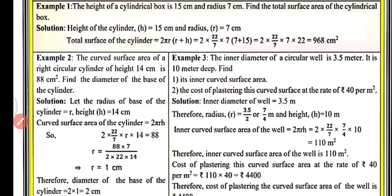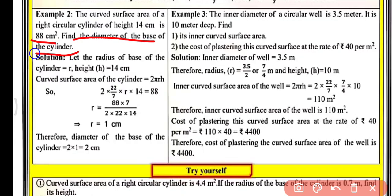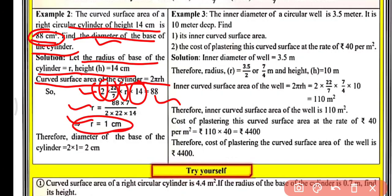Example 2: The curved surface area of a right circular cylinder of height 14 cm is 88 cm². Find the diameter of the base. We are given h = 14 cm and CSA = 88 cm². Using curved surface area = 2πrh, substituting π = 22/7, h = 14, and solving for r, we get r = 1 cm. Therefore the diameter is 2 cm.